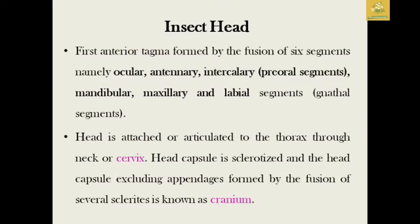The first anterior tagma, which is the insect head, is formed by the fusion of six segments known as the ocular, antennal, intercalary, mandibular, maxillary, and labial segments. These are the six segments said to be formed by fusion in the insect head.